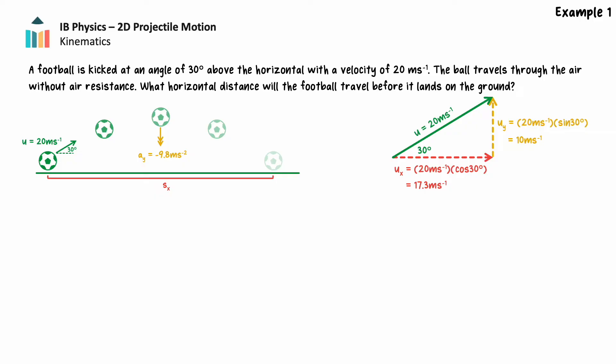With two-dimensional projectiles, we will need to consider both directions of motion separately, meaning these problems will often have at least two steps. Time in the air will be an incredibly important quantity for two-dimensional projectiles — this is determined by the vertical velocity. Imagine a ball thrown horizontally in the absence of gravity; the ball would continue moving through the air forever. The force of gravity accelerating the ball downward causes it to fall toward the Earth, limiting its time in the air.